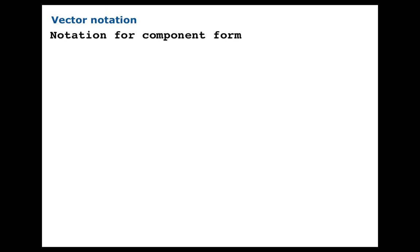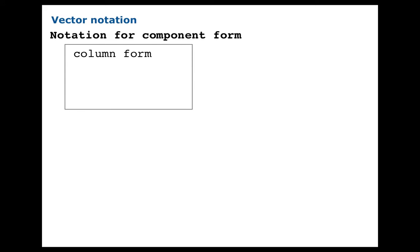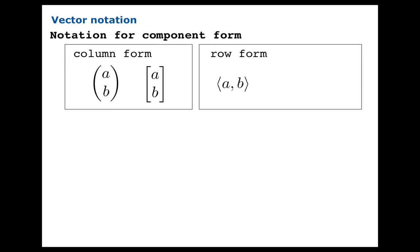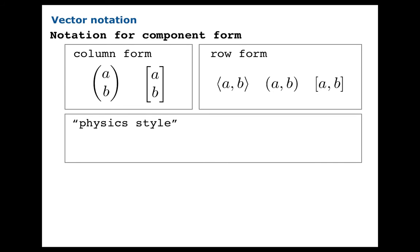Notation for component form can take different forms. There's so-called column form, which we're going to use in these notes. You could also use a column form with square delimiters, or you could write your vectors in row form — in row form you separate the components by commas. Angular delimiters are quite common; you might also see parentheses or square brackets. In physics class you tend to use yet another style, which I will call physics style, and we'll return to that in a few pages.